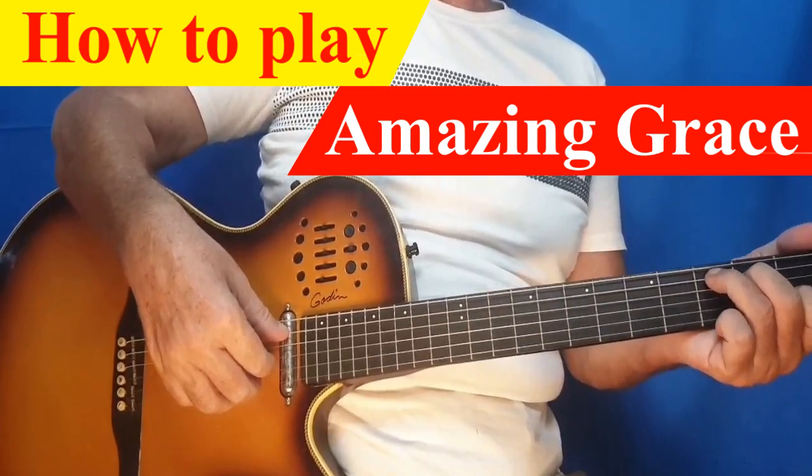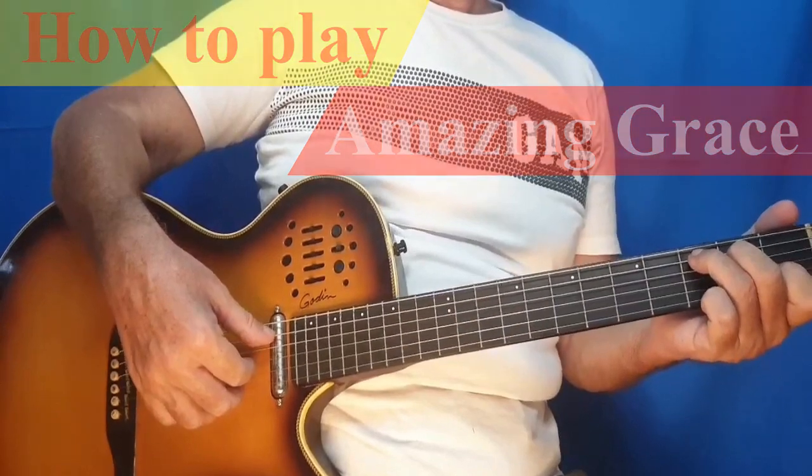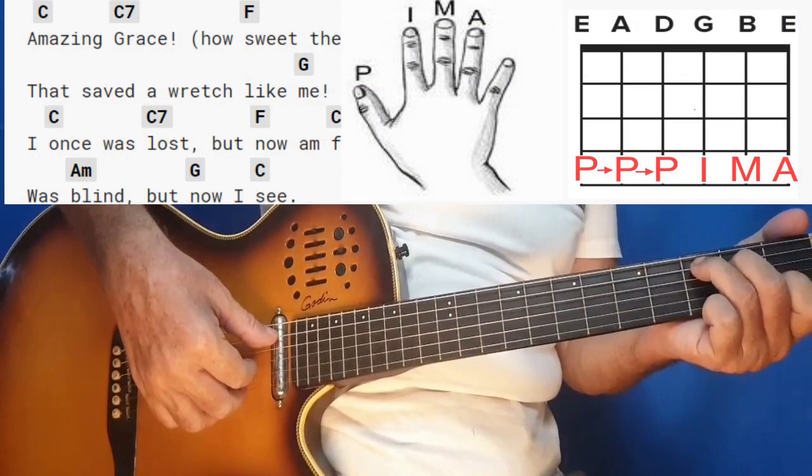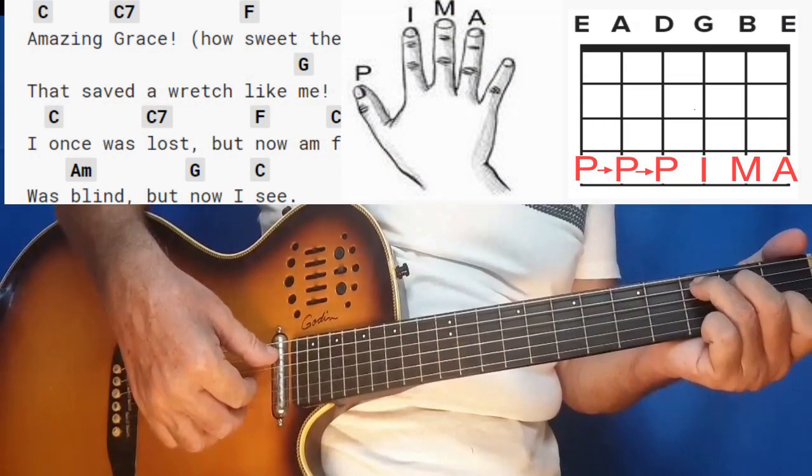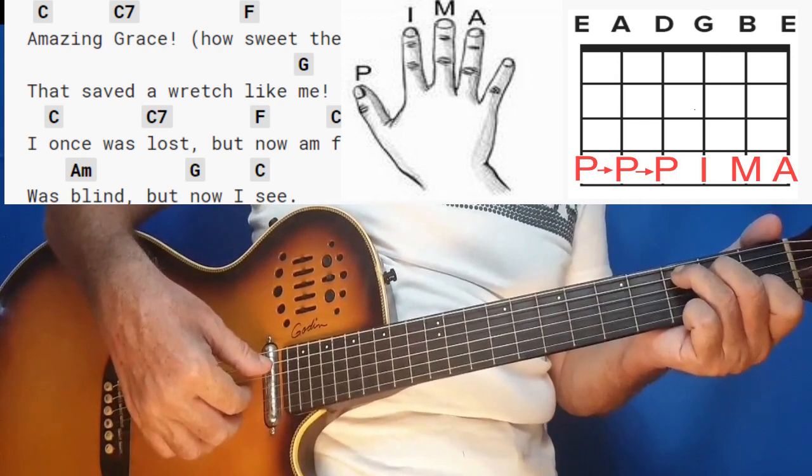How to play Amazing Grace with finger-picking. You will play with the thumb on two strings and then the other three fingers will have one string each.